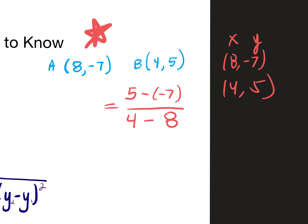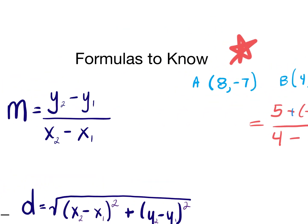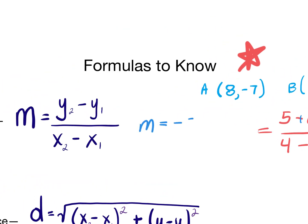Be careful with your signs. You can put a plus in between since it's minus a negative. In the numerator I have 5 plus 7, which gives me 12, over 4 minus 8, which gives me negative 4. So what is the slope? 12 divided by negative 4 is negative 3. You would say m equals negative 3. The negative really makes a huge difference — there is a huge difference between a slope of positive 3 and negative 3. Pay attention to signs.